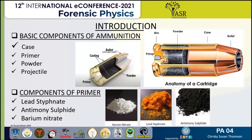The second component is the primer. It is a sort of a button which is fitted into the back of the cartridge. The primer has a sensitive explosive, and there is powder or propellant that fills inside the cartridge, and the bullet is seated inside the cartridge.